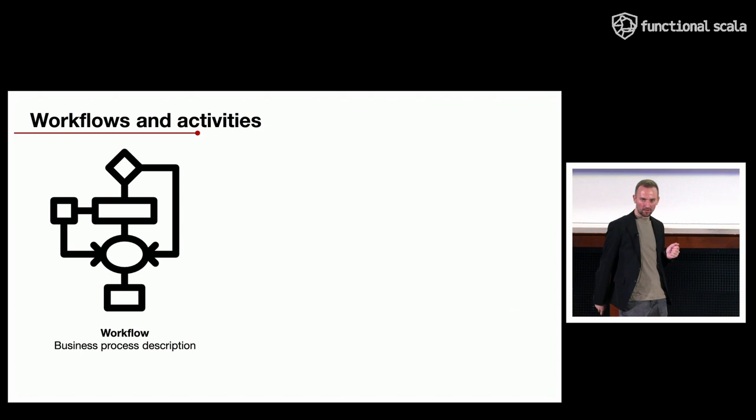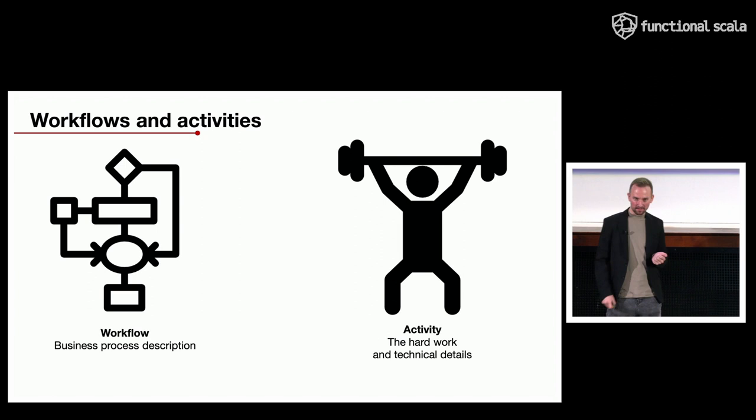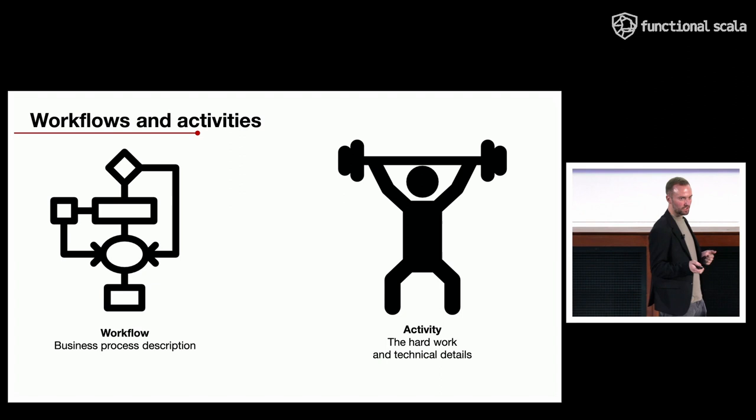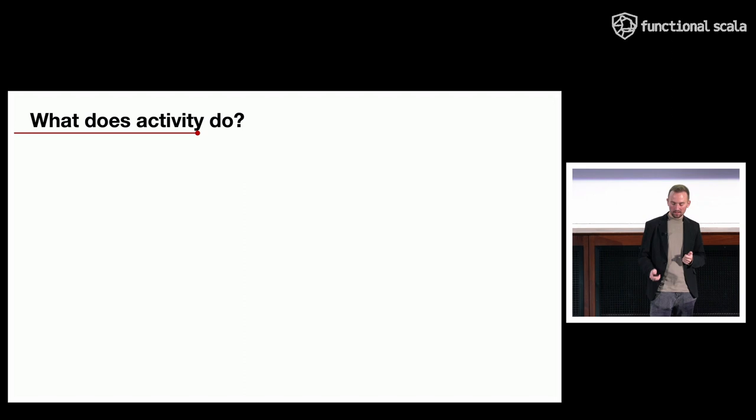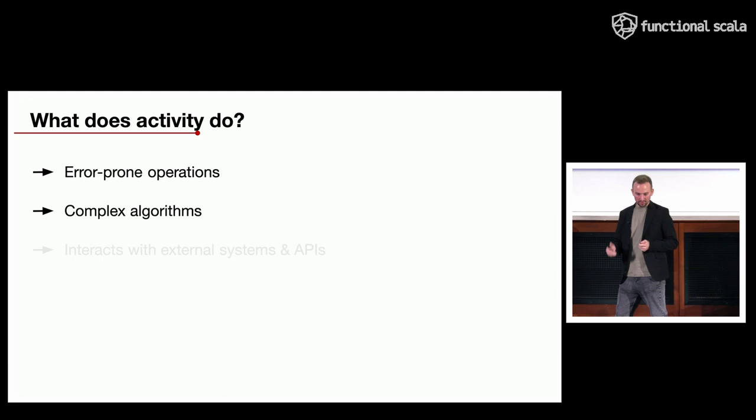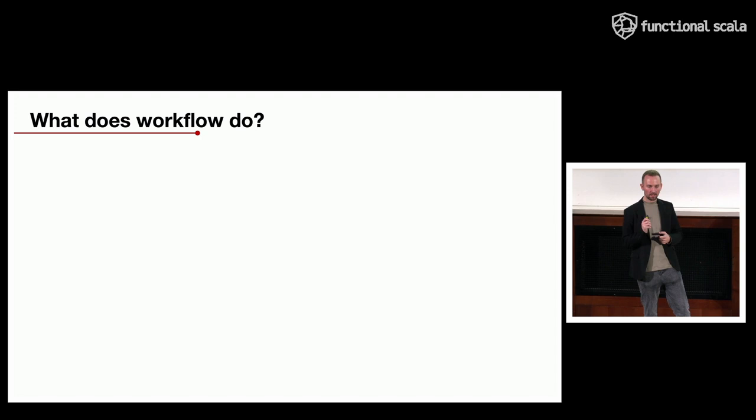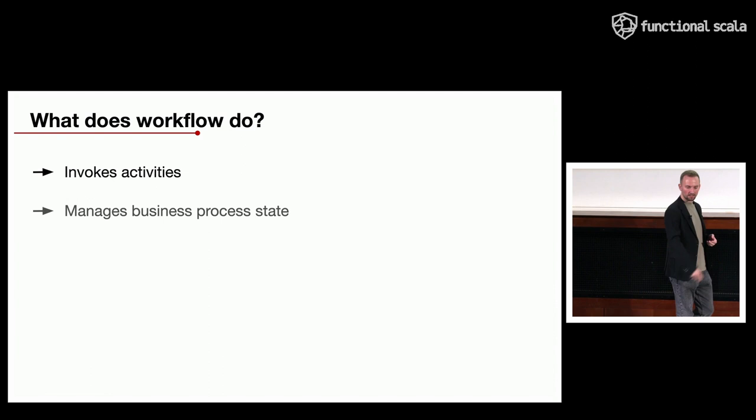Temporal consists of two main building blocks. The first is the workflow, which is a description of the business process. The second is the activity, which does all the heavy lifting and encapsulates each technical detail of your solution. Activities handle error-prone operations, complex algorithms, and interactions with external APIs or third-party systems, while the workflow consists of and invokes those activities.